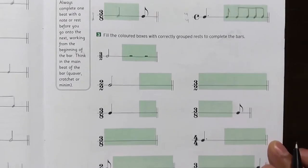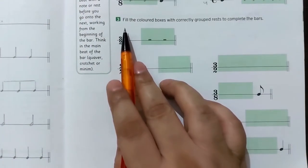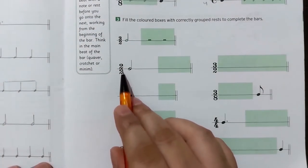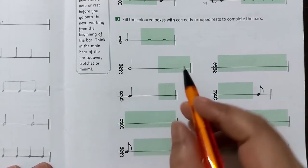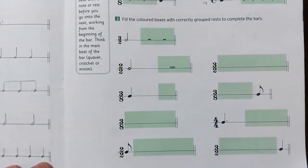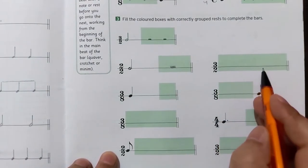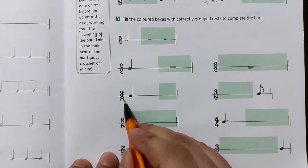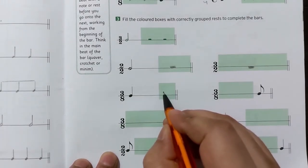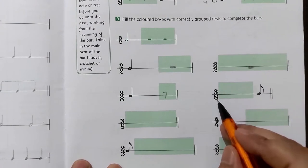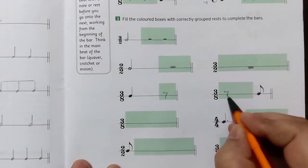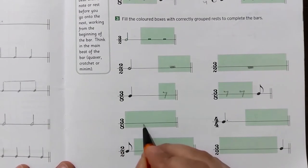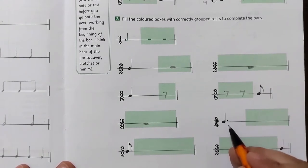Now in this exercise we have to fill the colored boxes with correctly grouped rests to complete the bars. First is two by two — two minim beats per bar — one minim given, so we add one minim rest. Next is three by two with the whole bar empty, so we write a semibreve rest. Next is three by eight — three quaver beat values total — one crotchet given, so we add one quaver rest. For the next three by eight bar, one note is given, so we need two quaver rests — we cannot make one crotchet rest here, that would be wrong.